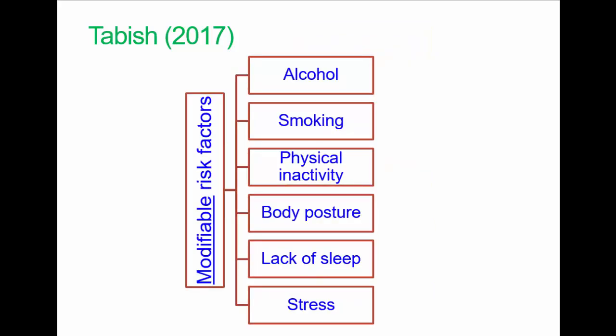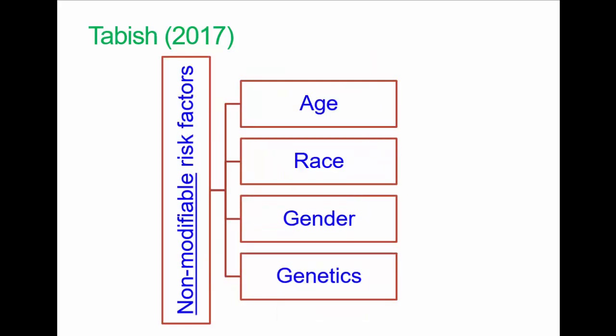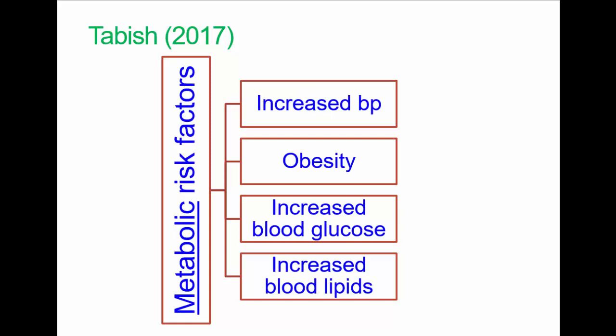Some risk factors can be modifiable, meaning people can take measures to change them, or non-modifiable, meaning there can't be changes. Here are some modifiable risk factors, many of which have been much in the news this year with respect to coronavirus and changes in lifestyle. Key non-modifiable risk factors are age, race, gender, and genetics. Metabolic risk factors include things like high BMI and its association, for example, to increased risk of type 2 diabetes — these are potentially somewhat modifiable by changes in lifestyle.